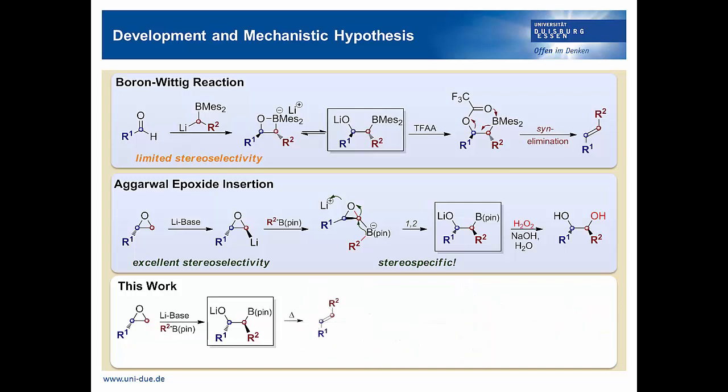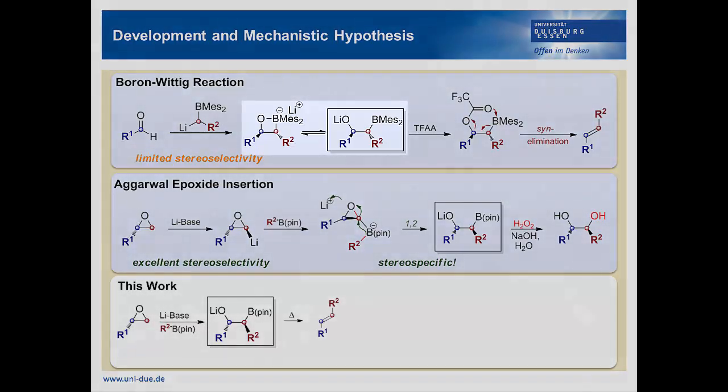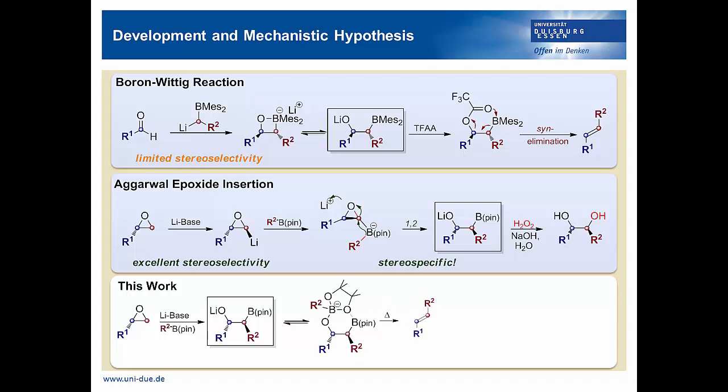Fortunately, just heating the resulting intermediates delivered the desired syn-elimination products exclusively. This result could be rationalized by elimination of a four-membered boroxetane or a six-membered ate-complex, which could be formed with excess boronate.